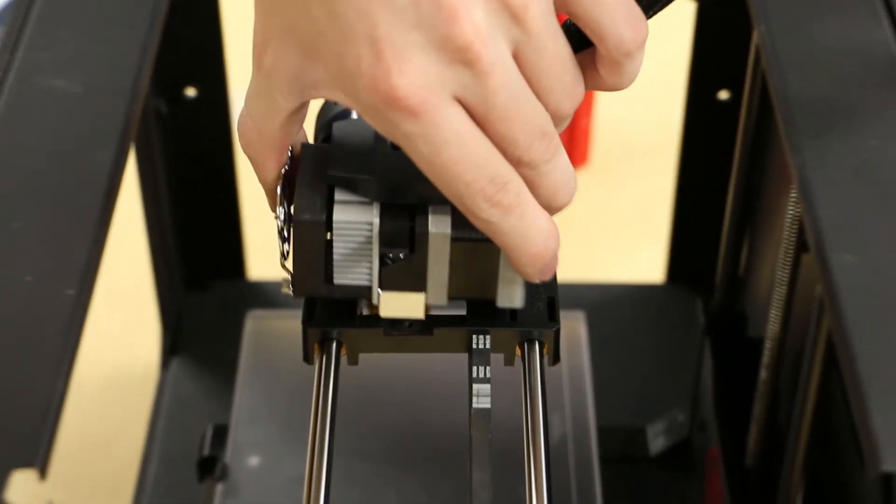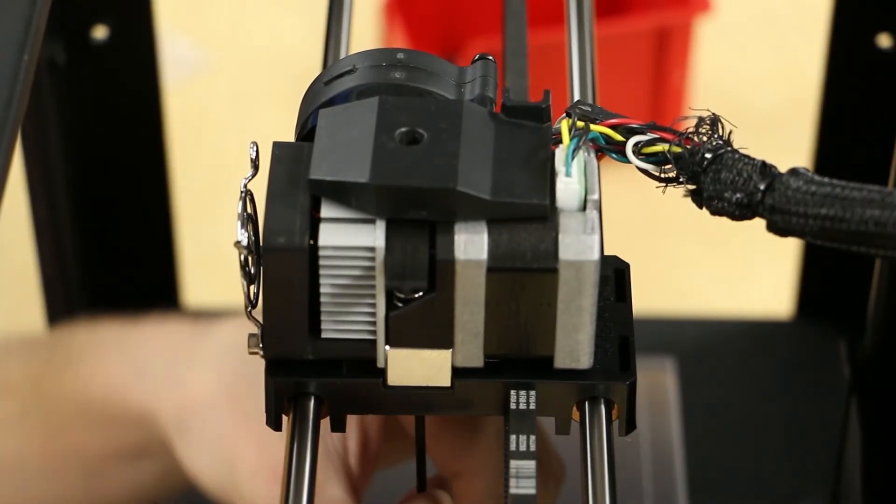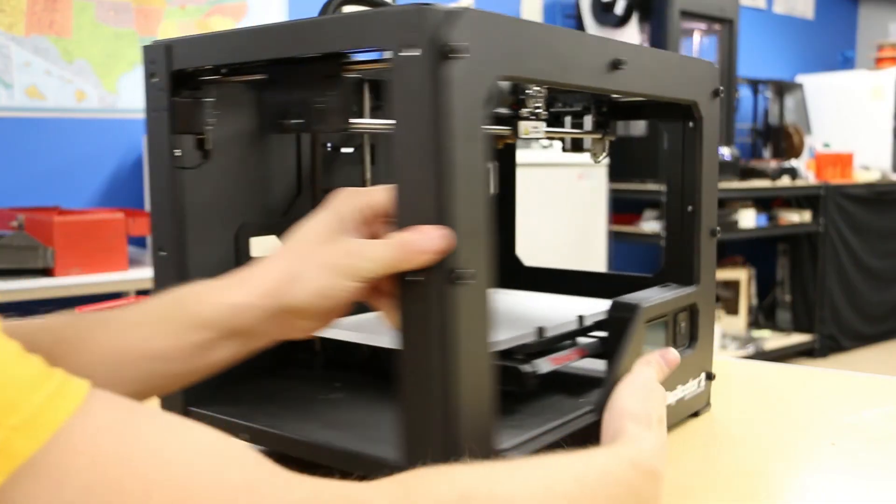Replace the extruder assembly back onto the carriage. Secure with its two set screws. Also replace the blower duct and the side panels to the machine.